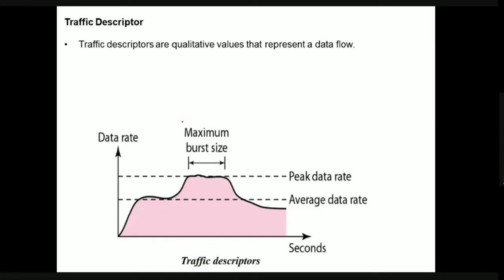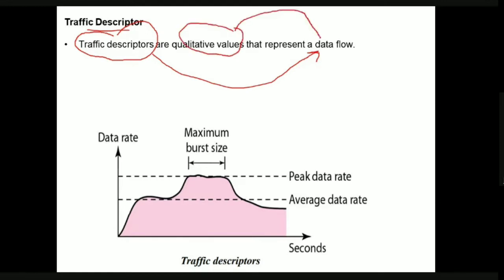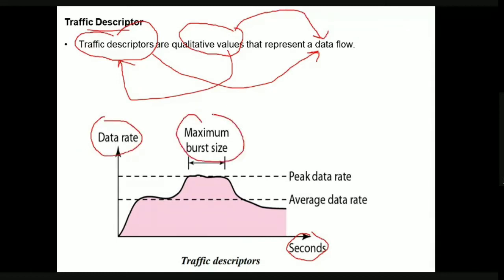Now we'll look at traffic descriptors. Traffic descriptors are qualitative values which represent how data is flowing in the network — that is, how data is being transmitted. On the x-axis we have time, and on the y-axis we have data rate. The traffic descriptors include maximum burst size, peak data rate, and average data rate.